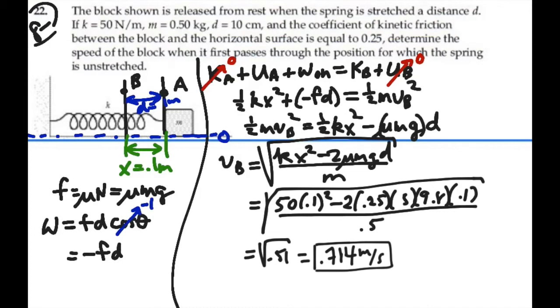So that is our velocity at point B, the speed of the block when it first passes through the equilibrium position, 0.714 meters per second. It could say 71.4 centimeters per second. That's our answer for this problem.